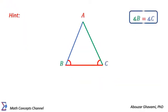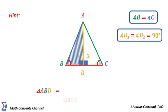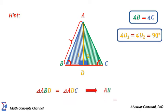As a hint, draw the altitude AD. Show that triangle ABD is congruent to triangle ADC. Then conclude side AB is equal to side AC.